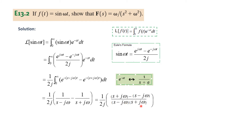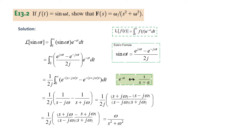We take the LCM and simplify. The s terms cancel, leaving 2jω in the numerator, so the 2j cancels and we get just omega at the top. The denominator multiplies as s squared plus omega squared, since j squared equals minus 1 and minus times minus 1 gives plus 1. So the final answer is omega over s squared plus omega squared.